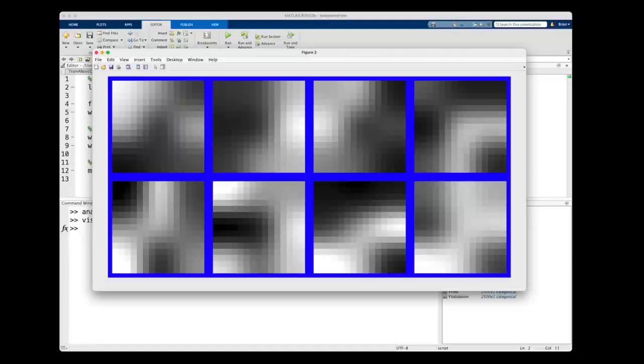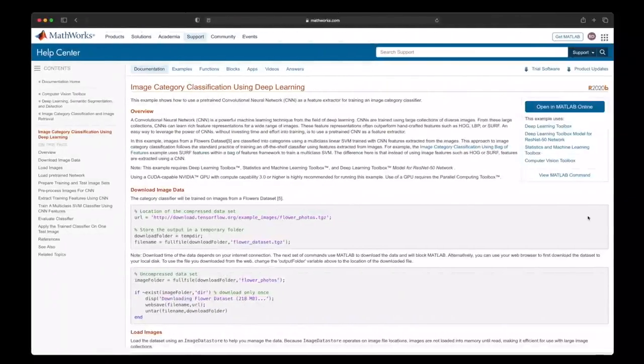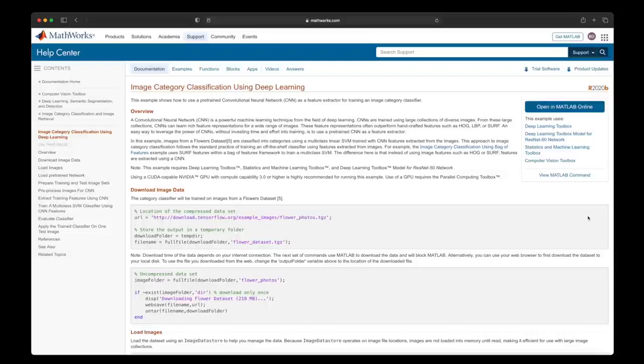Now, there isn't a whole lot of interesting detail in these low resolution black and white images. But we can do the same thing with a network that has been trained to recognize flowers within larger color images. To see this, let's look at the MATLAB example image category classification using deep learning.